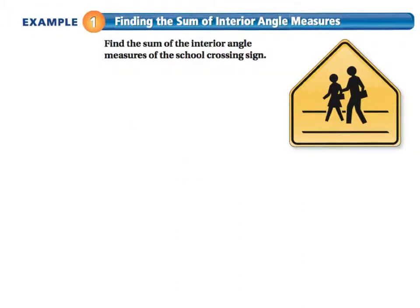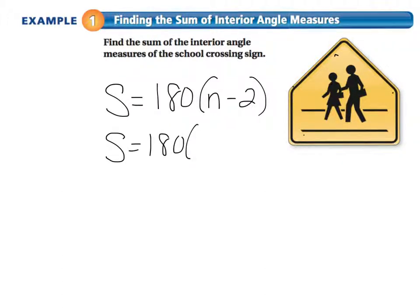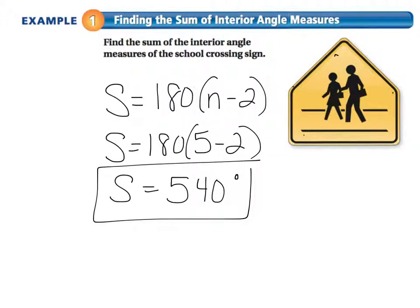In example 1, find the sum of the interior angle measures of the school crossing sign. I want to know what all five of these angles, 1, 2, 3, 4, 5, all add up to give me. Well, what could you do? You could add and find out each angle and try to figure it out that way, or we just use the formula. The sum is equal to 180 multiplied by the number of sides subtracted by 2. The sum then would be 180 multiplied by 5 subtracted by 2. 180 multiplied by 3 gives me 540 degrees. So, the sum of the interior angle measures is 540 degrees of this crossing sign.